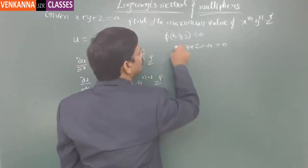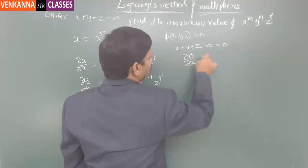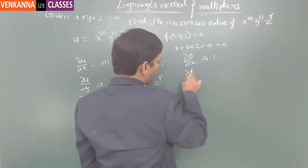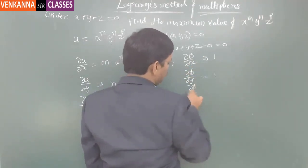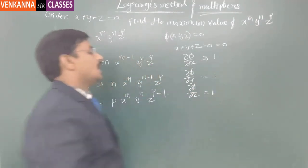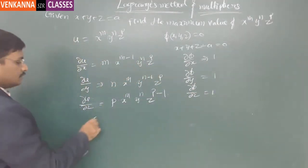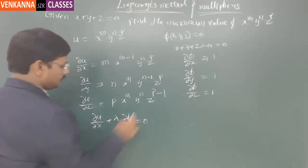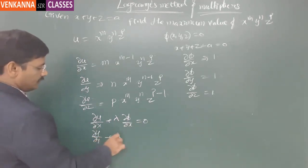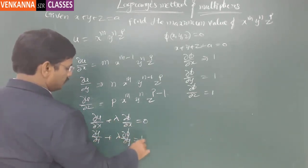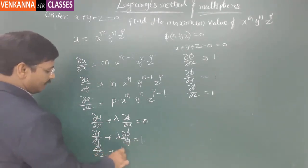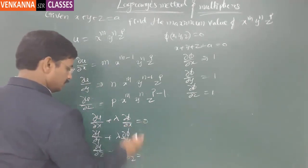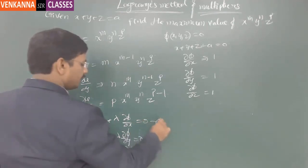The condition gives ∂φ/∂x = 1, ∂φ/∂y = 1, and ∂φ/∂z = 1. As per Lagrange's method of multipliers, ∂u/∂x plus λ times ∂φ/∂x equals 0. Similarly, ∂u/∂y plus λ times ∂φ/∂y equals 0, and ∂u/∂z plus λ times ∂φ/∂z equals 0. These are the three conditions.